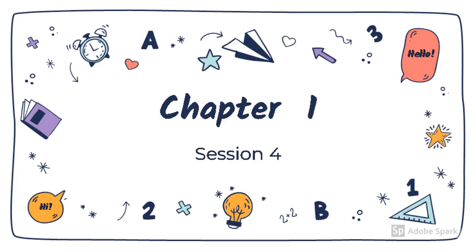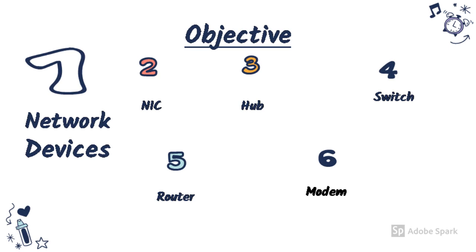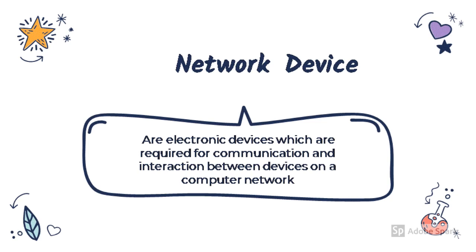Hello children, today we will be studying more topics of chapter 1. We will be discussing about network devices and the different types of network devices, which are NIC, Hub, Switch, Router, and Modem. Network devices are the electronic devices required for communication and interaction between devices on a computer network. They are hardware devices used to connect computers, printers, and other electronic devices to a network.